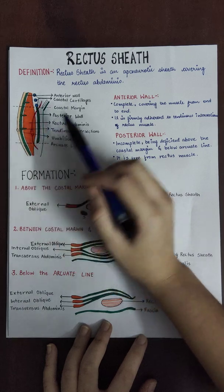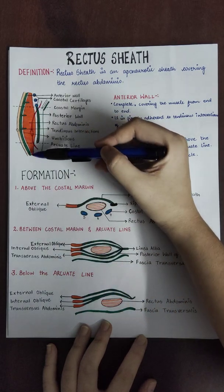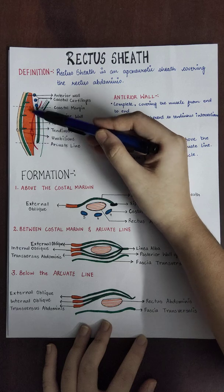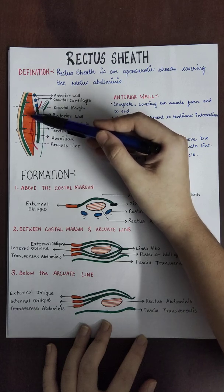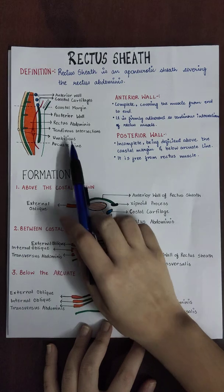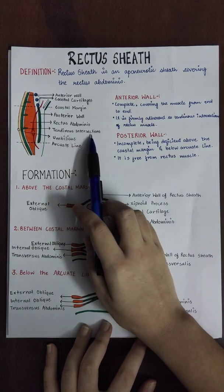The anterior wall is firmly adhered to the rectus abdominis — it is tightly attached to the tendinous intersections.